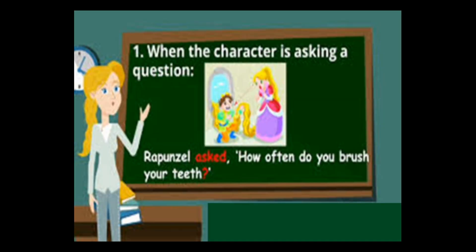Let me explain. In this picture, a character is asking a question — Rapunzel is asking: 'How often do you brush your teeth?' In this sentence, 'Rapunzel asked' is the reporting verb, and 'how often do you brush your teeth?' is the reported speech, which is enclosed in inverted commas.